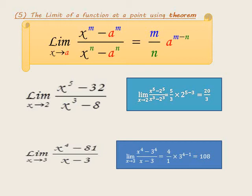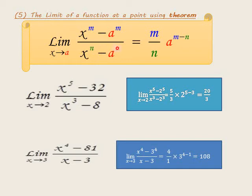The limit of a function at a point by using the theorem. The theorem states: limit as x approaches a of (x^m minus a^m) over (x^n minus a^n) equals (m over n) times a^(m minus n). This applies when you see x and a with like powers in numerator and denominator — the same base with power m in the numerator and power n in the denominator — giving the value m over n times a to the power (m minus n).